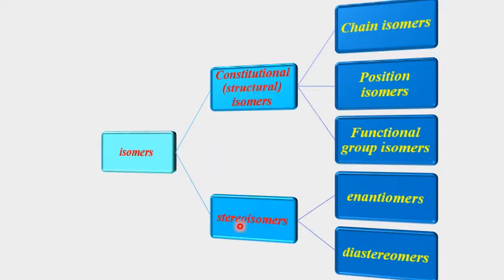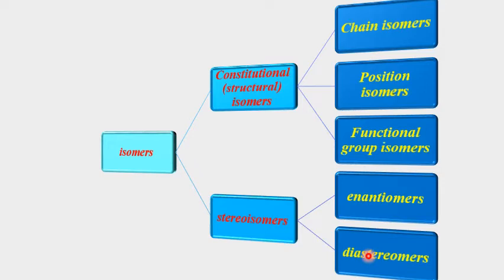Constitutional isomers can be further divided into three groups: chain isomers, position isomers, and functional group isomers. Stereoisomers have two groups: enantiomers and diastereomers. Today in this video we are going to talk about structural isomers only, and in our next video we will talk about stereoisomers.